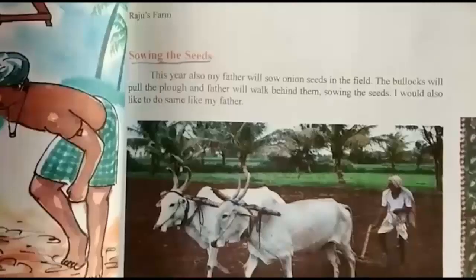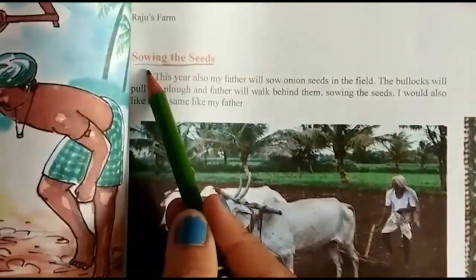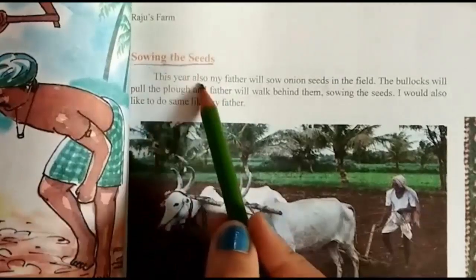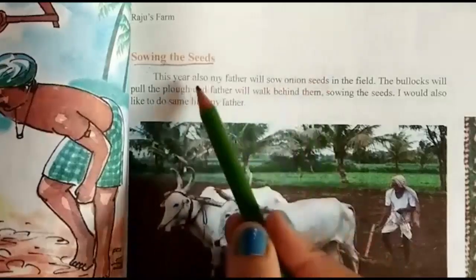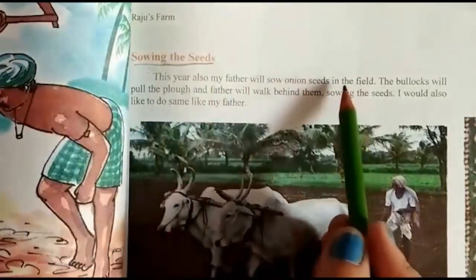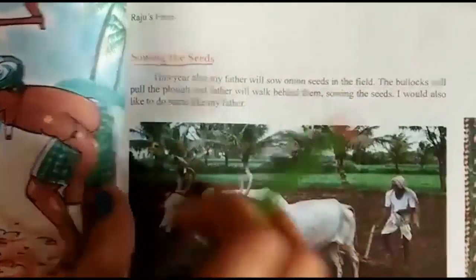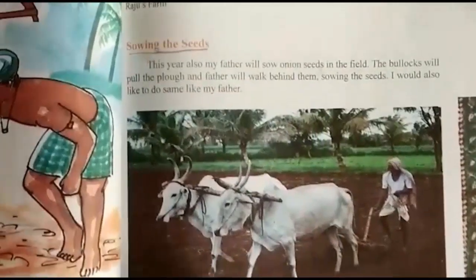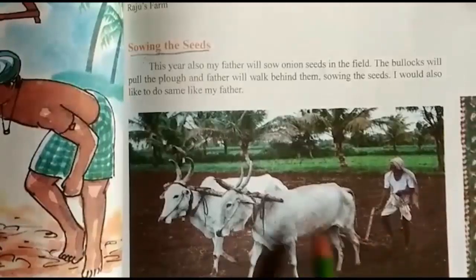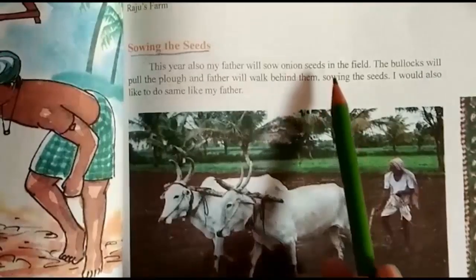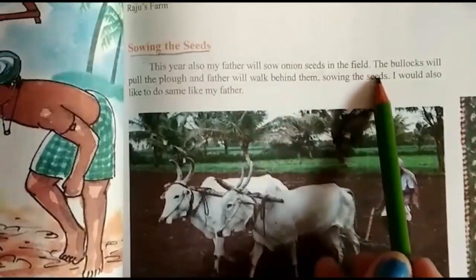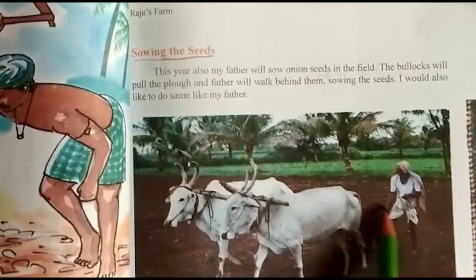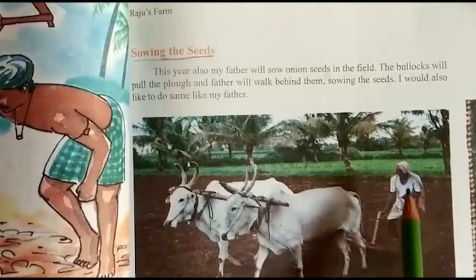Now turn your page. Sowing the seed — that means beej bona. Seed means beej, sowing means bona. This year also my father will sow onion seeds in the field. The bullock will pull the plow and father will walk behind them. You can see in this picture: father is pulling the bullocks with the plow behind. Raju says he would also like to do the same as his father.